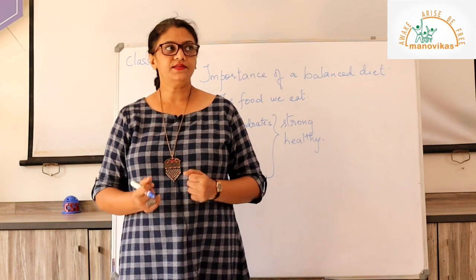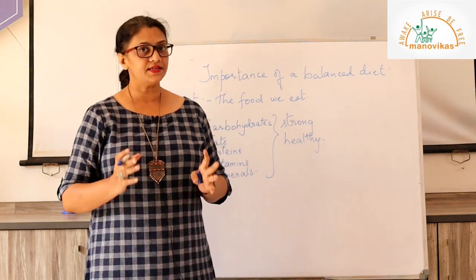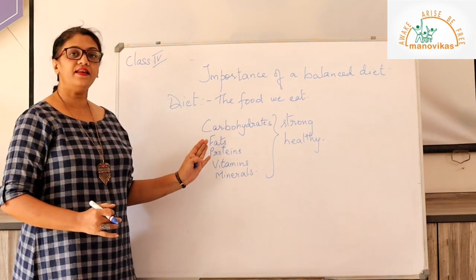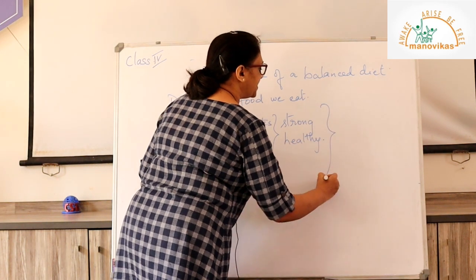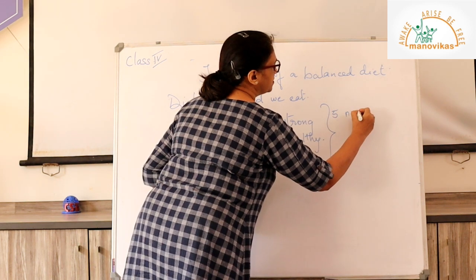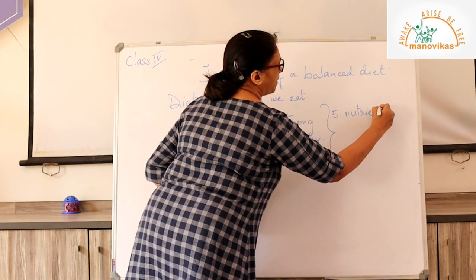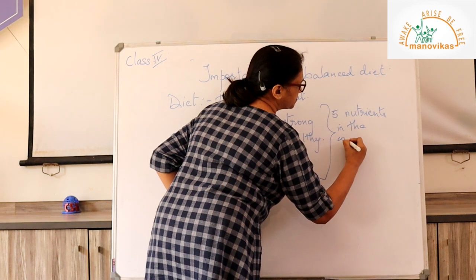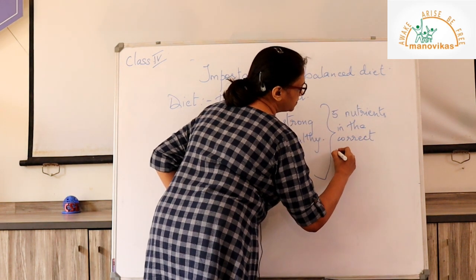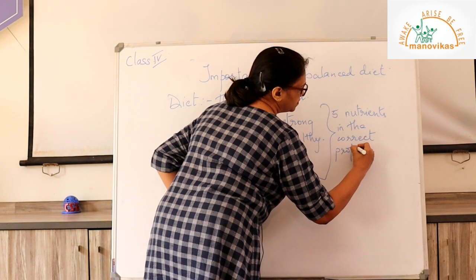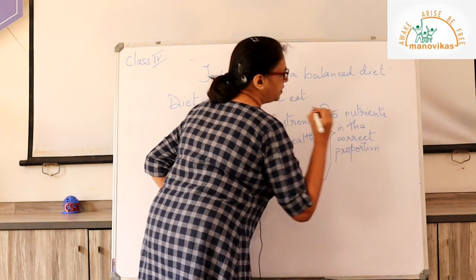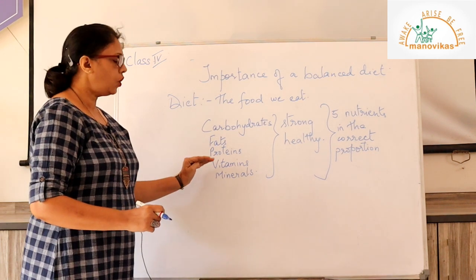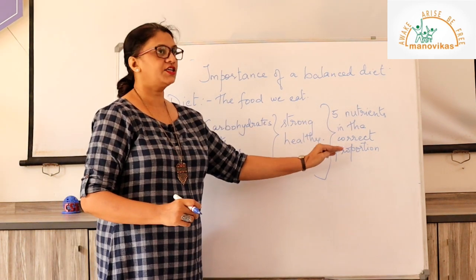So what is a balanced diet? A balanced diet is a diet that contains all five nutrients in the correct proportion. The definition: a diet that contains all the nutrients in the correct proportion.